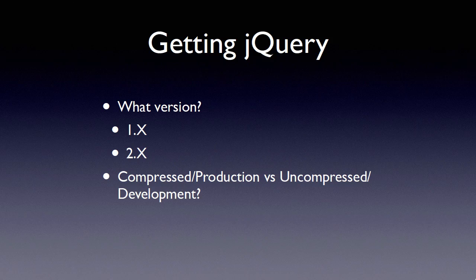The next question is: compressed or production version versus uncompressed or development version. Best practices for JavaScript developers tells us that when we take our JavaScript files, we want to compress them when we put them on a website. That makes the files much smaller and therefore quicker to download. But that compression ends up making the source code essentially unreadable, so normally you only do that as you move something from your development server to production. For our cases, we'll be using jQuery but won't be looking at the jQuery source code, so the compressed or production version should be fine. I definitely recommend taking a look at the jQuery source code later on, because it's kind of cool.